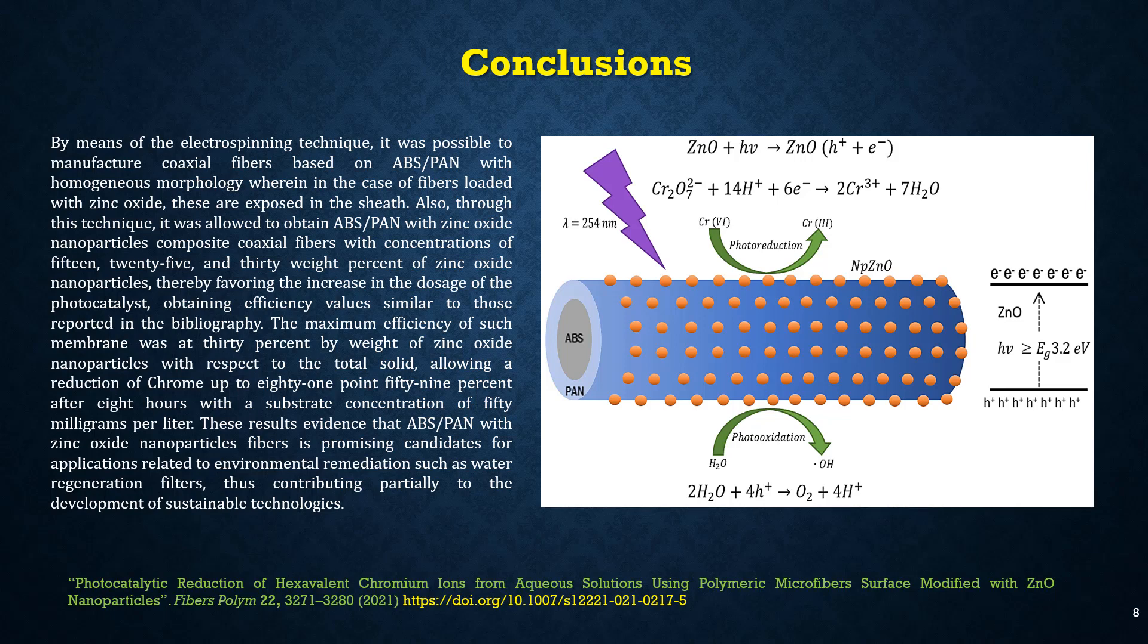The maximum efficiency of such membrane was at 30% by weight of zinc oxide nanoparticles with respect to the total solid, allowing a reduction of chrome up to 81.59% after 8 hours with a substrate concentration of 32 mg per liter. These results evidence that ABS polymer with zinc oxide nanoparticle fibers are a promising candidate for applications related to environmental remediation, such as water regeneration filters, thus contributing partially to the development of sustainable technologies. Thanks for your attention.